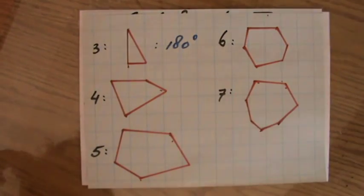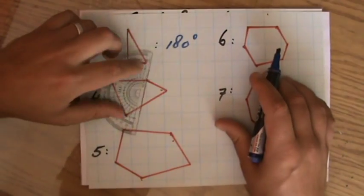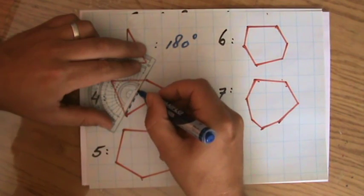Now, for the quadrilateral, also in my previous video, I showed you, or I asked the question, how many triangles can we create out of a quadrilateral? And then we said, well, two.